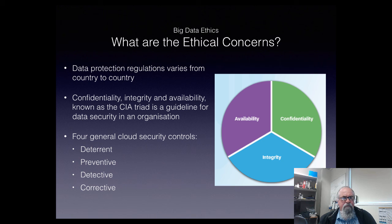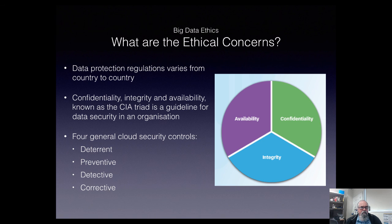Four general cloud security controls are available. Deterrent: make it hard to get in, warn people, have penalties in place. Preventative: this could be your firewall or rules-based setup to stop people getting in. Detective: if somebody does break in, it lets you know — the worst thing that can happen is someone breaks in and you don't know about it. Corrective: once there has been a breach or a leak of data, we need to take corrective action to make sure it doesn't happen again.